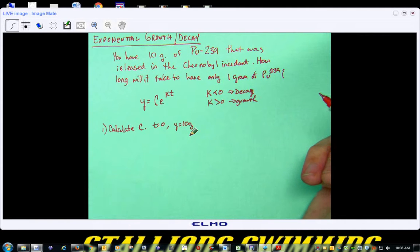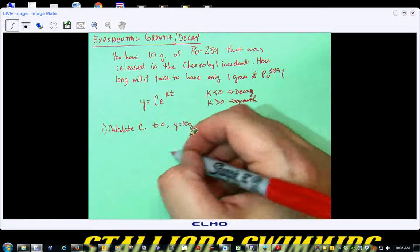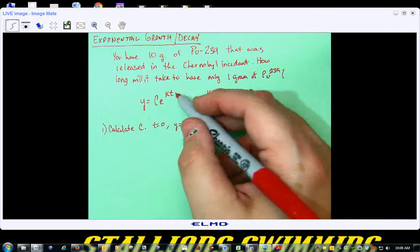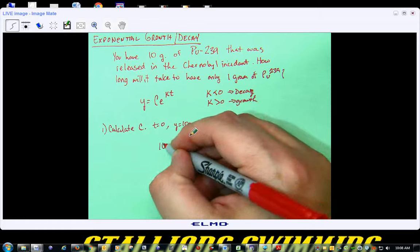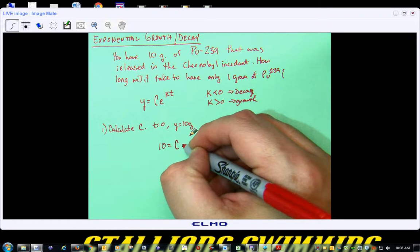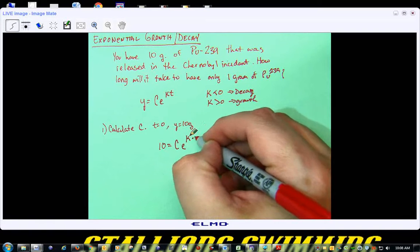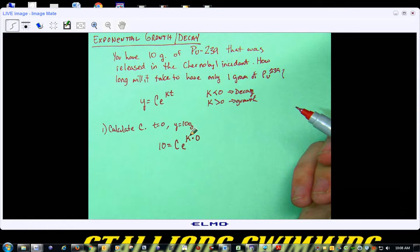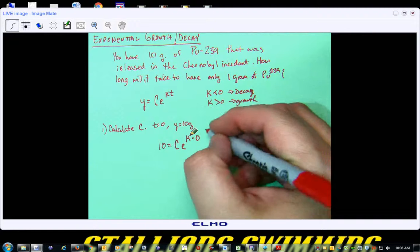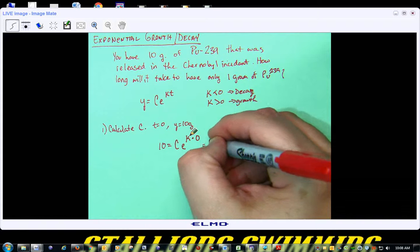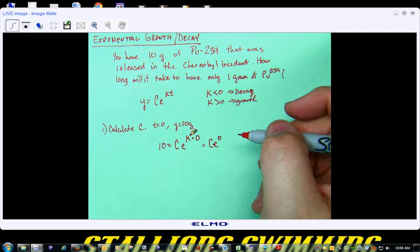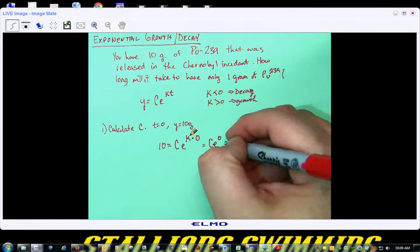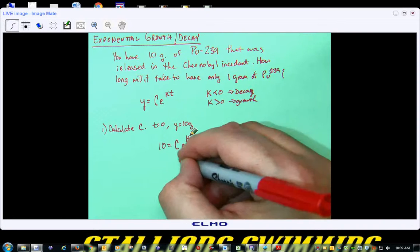So, if we go to the equation, Y equals CE to the KT, we're going to end up putting in, Y is ten, that's equal to C times E. I don't know what K is, but I know my time is zero. So, what's K times zero? Zero. So, I have CE to the zero power. So, what's anything to the zero power? One. So, that's C times one, which is C. So, what's my C equal to? Ten.